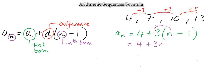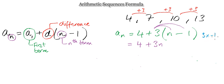Expanding the bracket: four plus three n, and then three multiplied by minus one. We need to be very careful — that's positive three multiplying by negative one. A lot of people make the mistake of ignoring the signs, but the signs are extremely important. Positive three multiplied by negative one gives negative three. Adding like terms: four minus three gives positive one. So the expression is three n plus one.